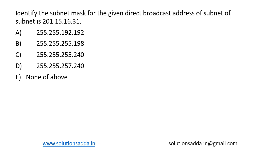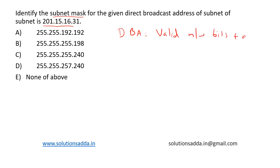This is a question from computer networks. We are asked to identify the subnet mask for the given directed broadcast address 201.15.16.31. As we know, the directed broadcast address is valid network bits plus all host bits that are one.